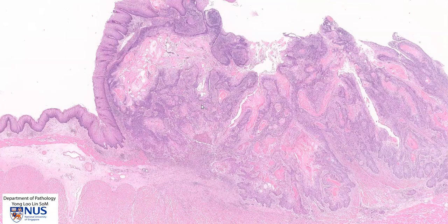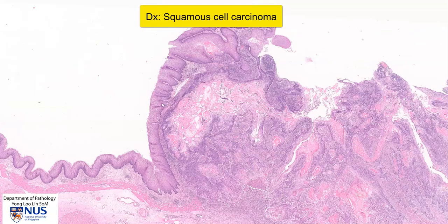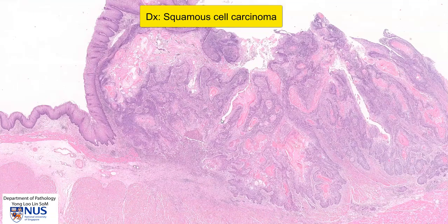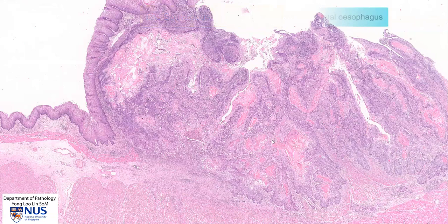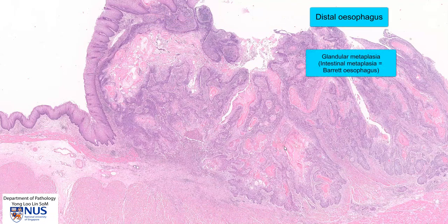This is an example of squamous cell carcinoma of the esophagus, which makes sense because the normal lining of the esophagus is stratified squamous epithelium, and therefore the malignancy of the mucosa would tend to be squamous cell carcinoma. In the more distal esophagus, there can be glandular metaplasia as well as intestinal metaplasia — this is known as Barrett's esophagus — and this can give rise to dysplasia and adenocarcinoma.